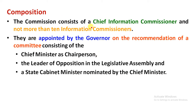The State Chief Information Commissioner and State Information Commissioners are appointed by the Governor, with the help of a committee. This committee consists of the Chief Minister as Chairperson, the Leader of the Opposition in the Legislative Assembly, and a State Cabinet Minister nominated by the Chief Minister.